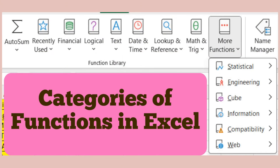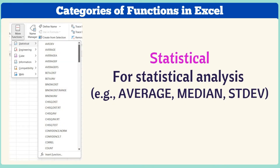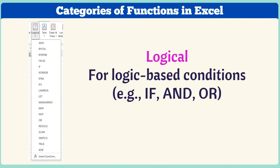Functions in Excel are grouped into different categories. We have the Math and Trig category for mathematical operations — examples are SUM, ROUND, and INT (integer). The Statistical category is for statistical analysis — examples are AVERAGE, MEDIAN, and STDEV (standard deviation). The Logical category is for logic-based conditions — some examples are IF, AND, and OR.